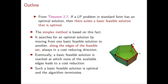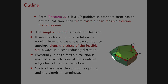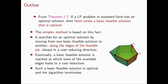It searches for an optimal solution only among the basic feasible solutions of the polyhedron. The main idea of the simplex method is to move from a basic feasible solution to the next along the edges of the feasible set, in such a way that the next basic feasible solution always has cost smaller than the previous one.